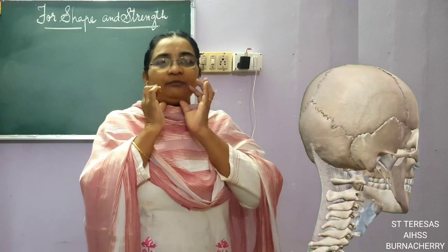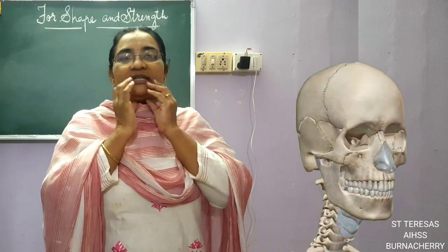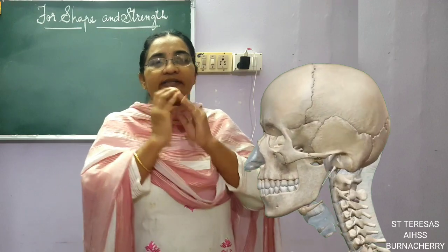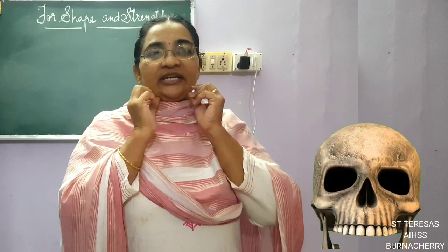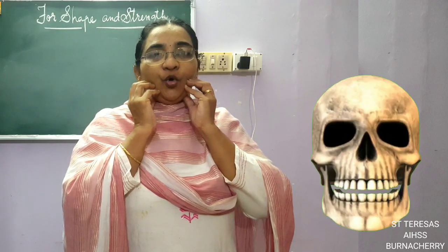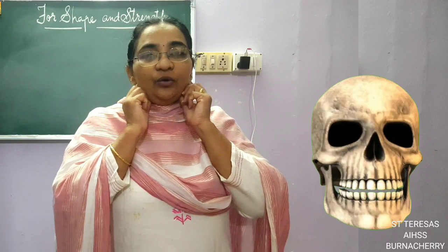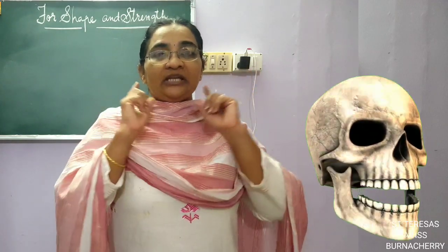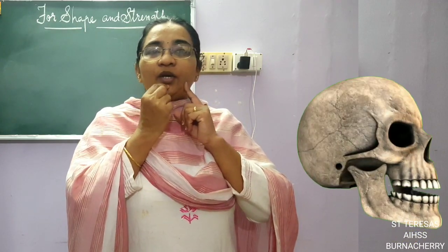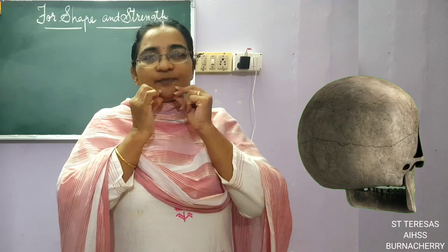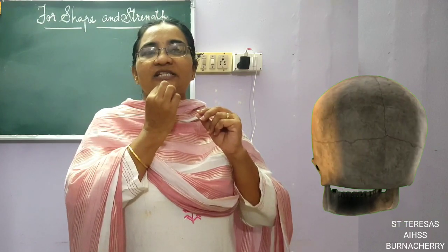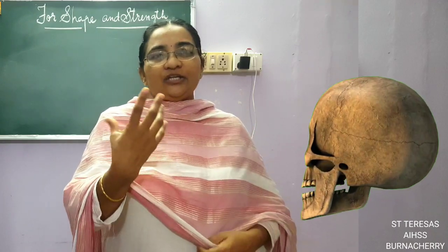Coming down, you have a chin, the tongue, and the teeth — all this is part of the skull. We have only one movable bone in the skull, which is the lower jaw bone. The only movable bone inside the skull is the lower jaw bone. We can move only this bone in the skull. When you talk, this part — the lower jaw — is the one which is moving. If it were not moving, we would not be able to talk.